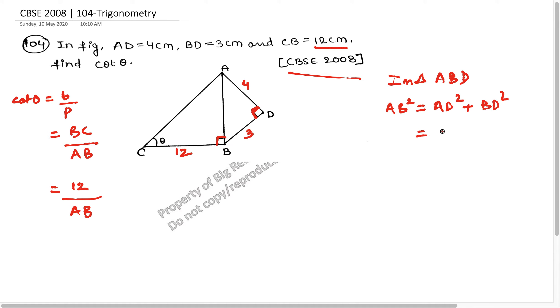Now AD is given as 4, so 4 square plus BD is given as 3, so this will be 3 square. And this will become 16 plus 9, which is equal to 25. If AB square is equal to 25, then AB will be equal to 5.